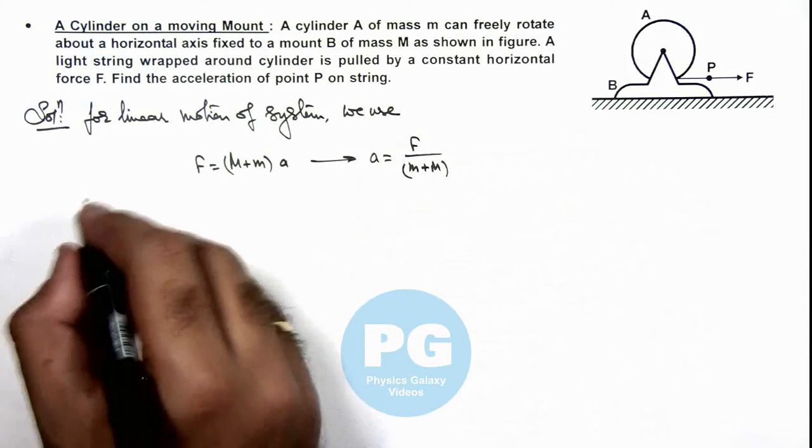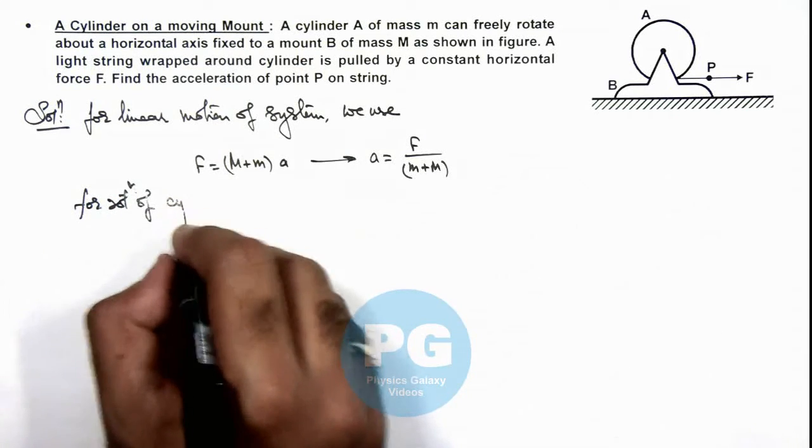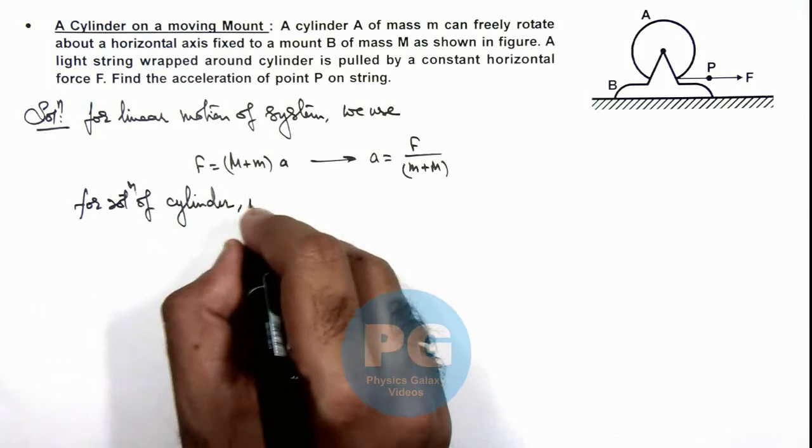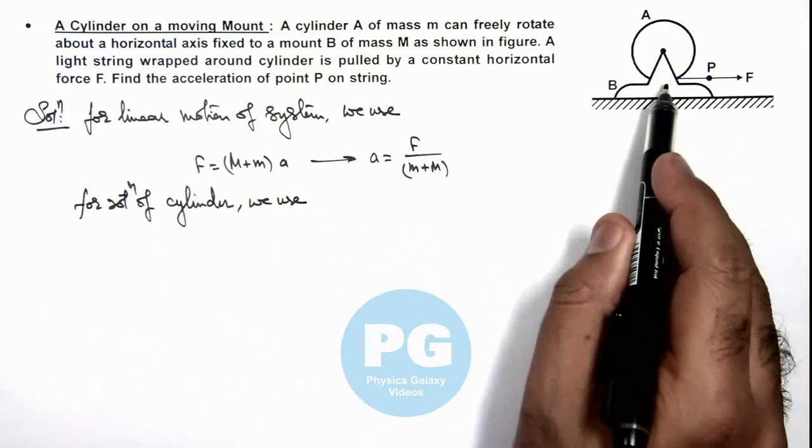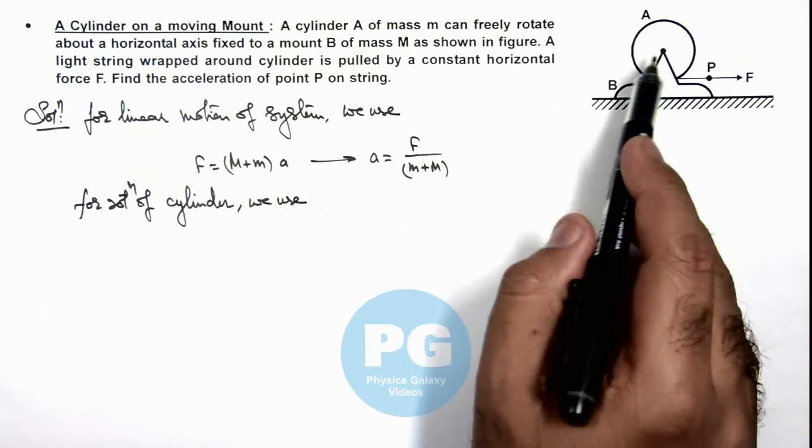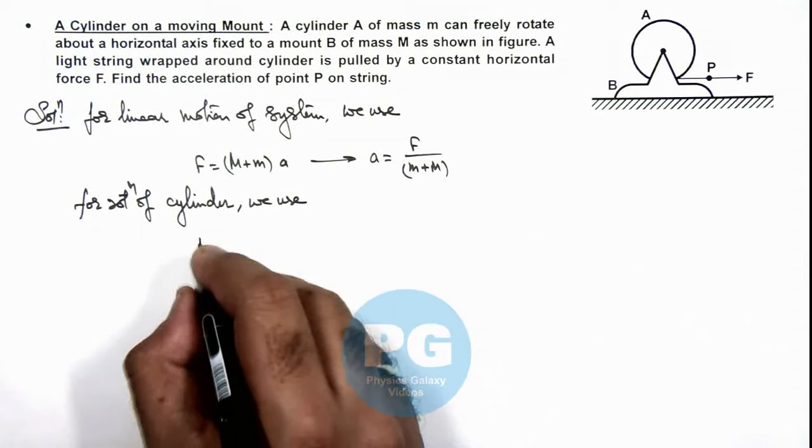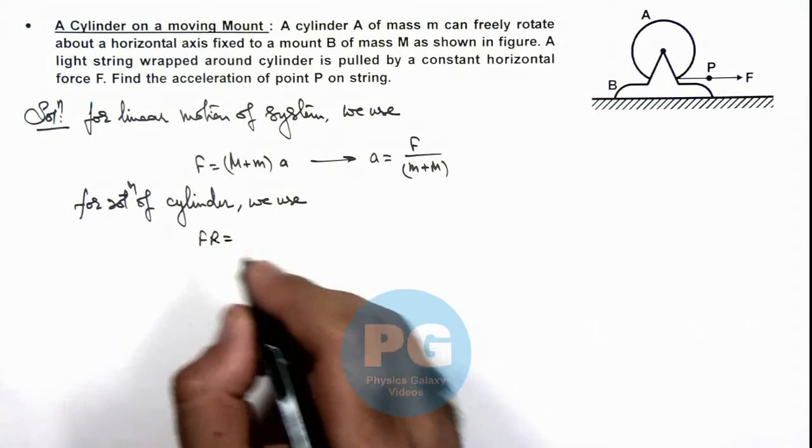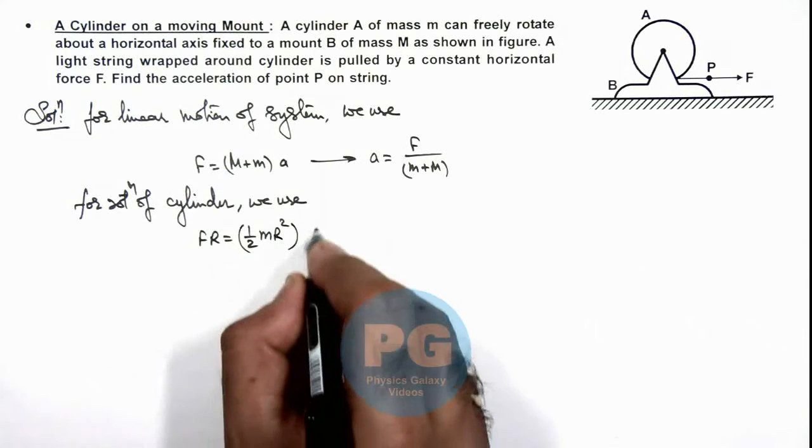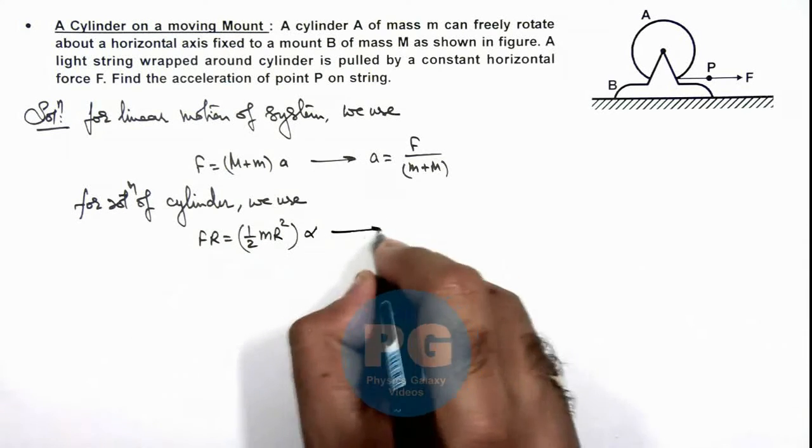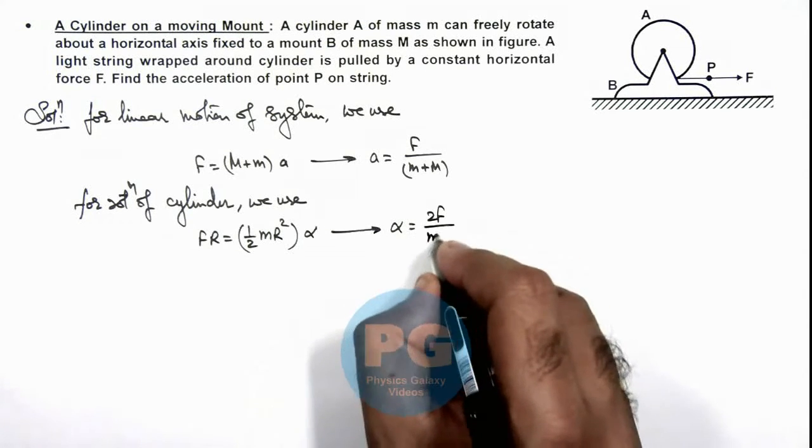And for rotation of cylinder, here we can use: the torque acting on cylinder is FR, which should be equal to Iα, where α is the angular acceleration with which the cylinder will rotate. So here we can write FR equals its moment of inertia, we can write as (1/2)mR² multiplied by α, which gives us the value of angular acceleration of cylinder which is 2F/(mR).